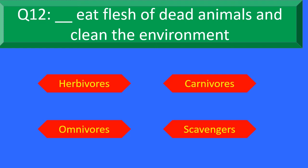Dash eat flesh of dead animals and clean the environment — Option A: Herbivores, Option B: Carnivores, Option C: Omnivores, and Option D: Scavengers. Your time starts now.